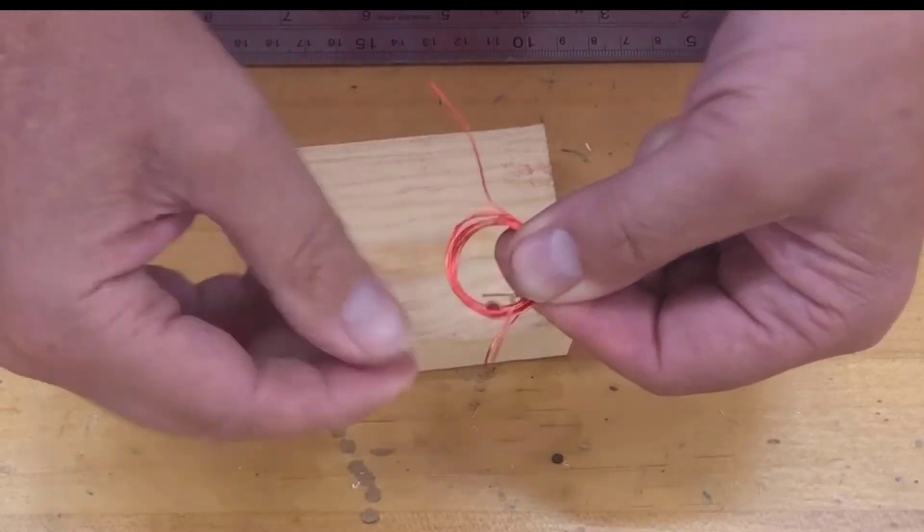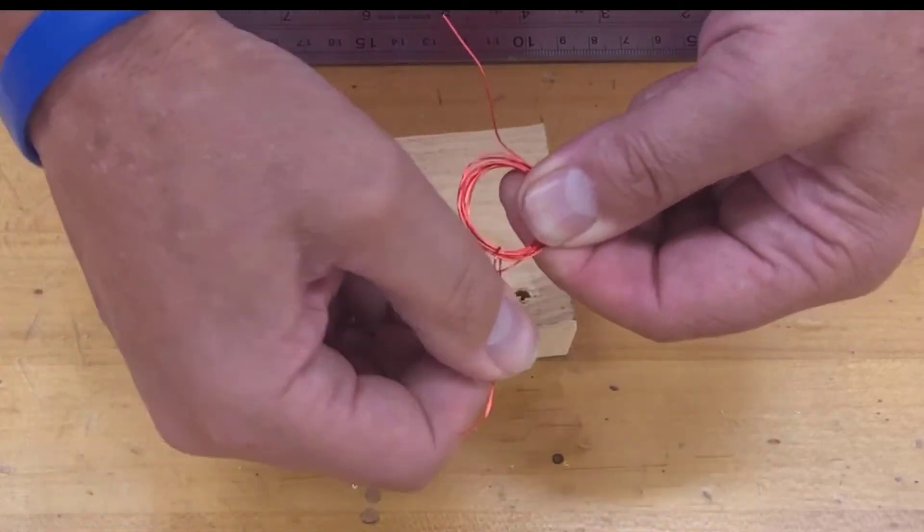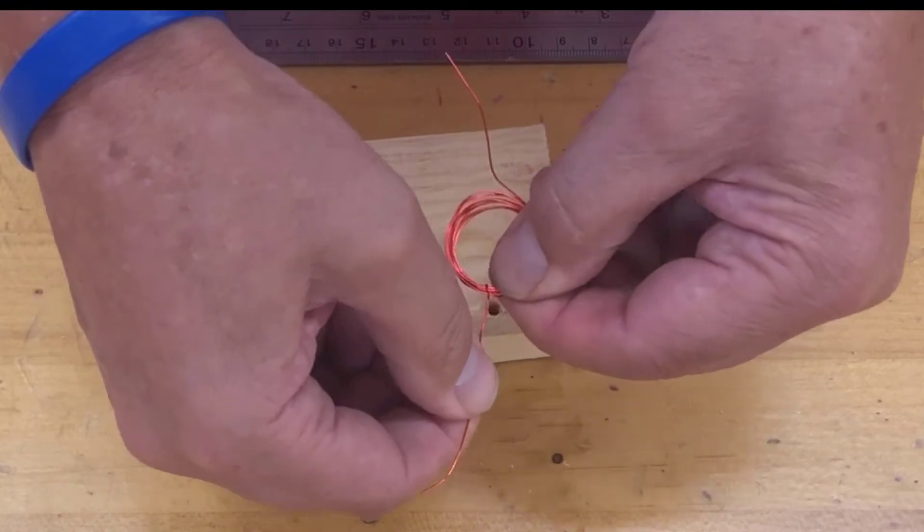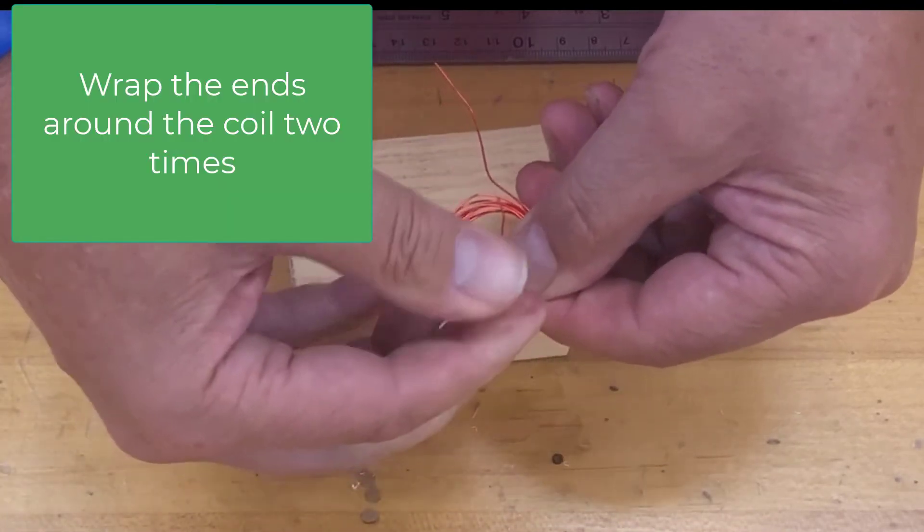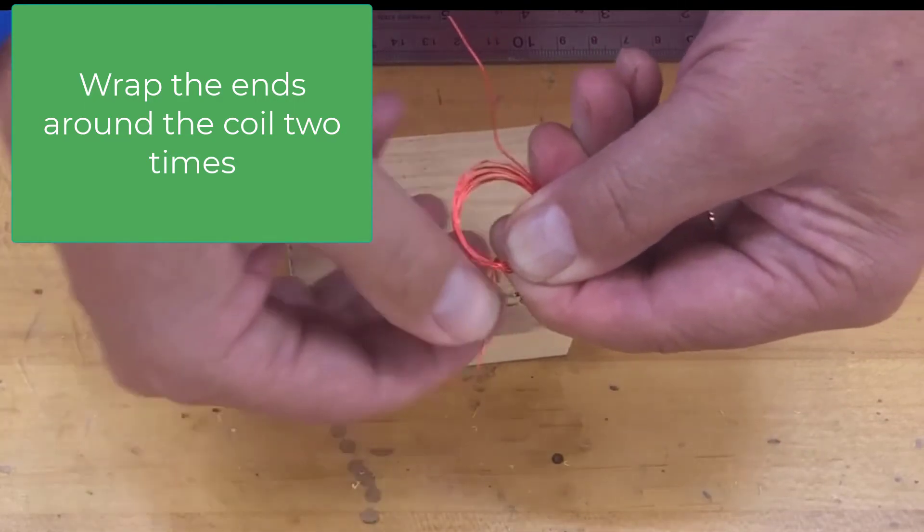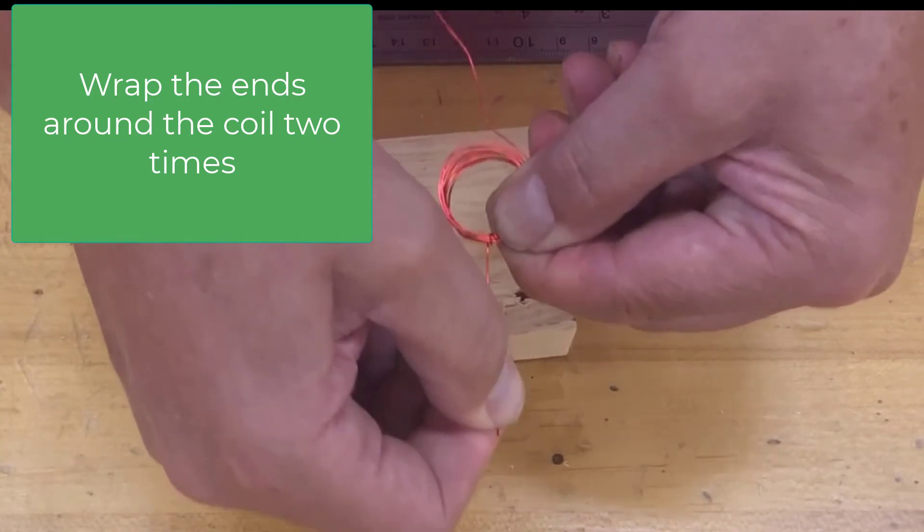So this piece here is gonna go inside once, pull it snug. It's gonna go inside a second time. We want two wraps on this. Second time, pull that snug.